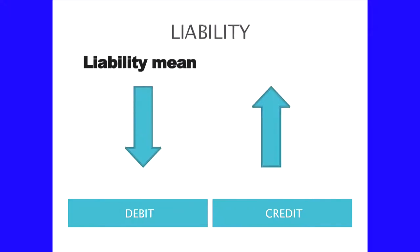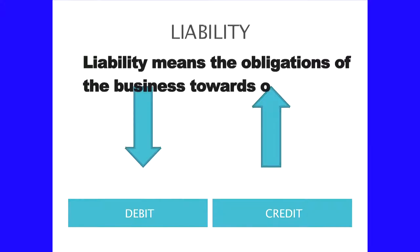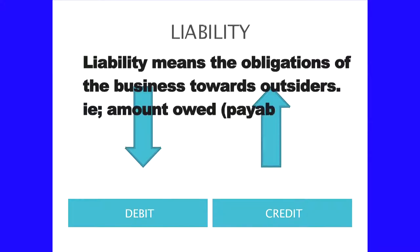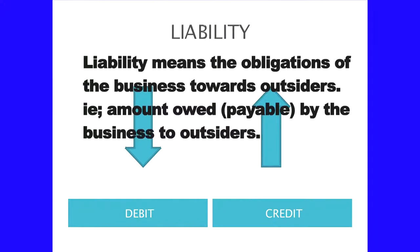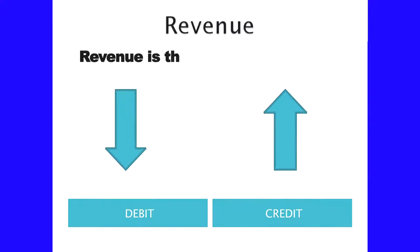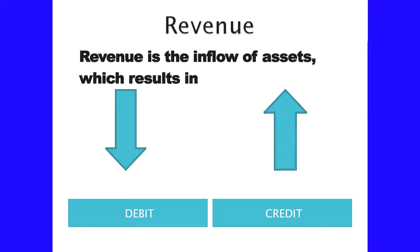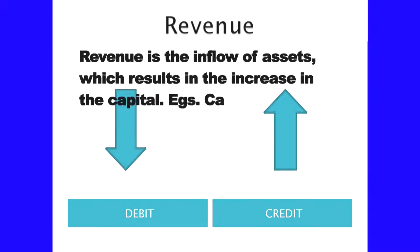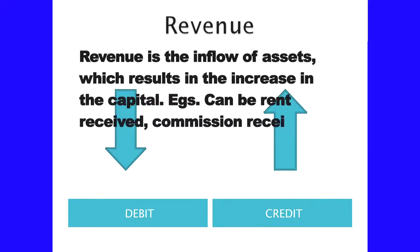Liabilities means the obligations of the business towards outsiders — that is, the amount payable by the business to outsiders can be called as liability. What is revenue? Revenue is the inflow of assets which results in the increase in capital. We can include rent received as a revenue, and commission received also as a revenue.